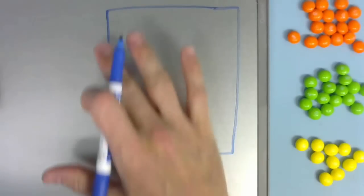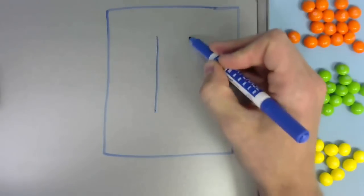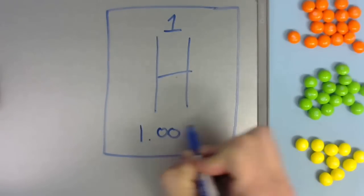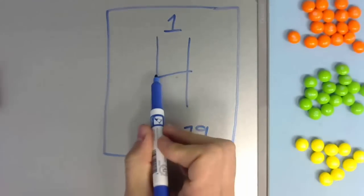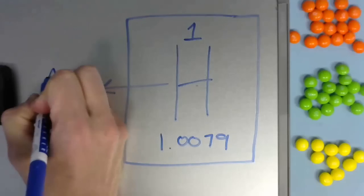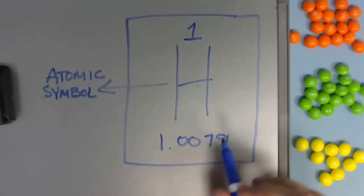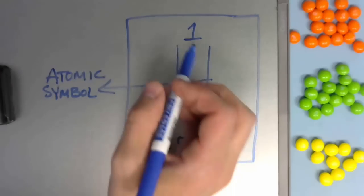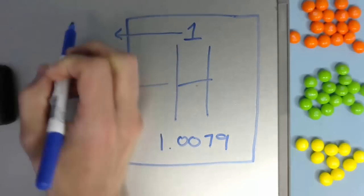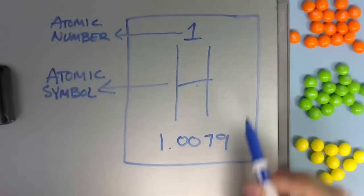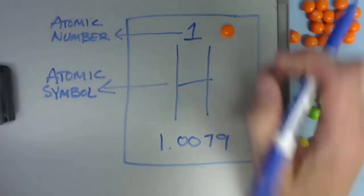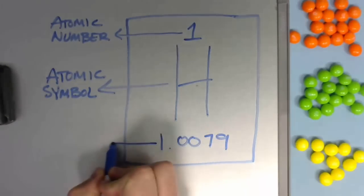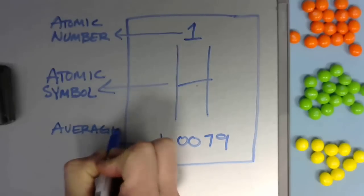If we draw a bigger version of what's on the periodic table of elements, you'll notice for hydrogen you have a big H, a number 1 on the top, and then a number below it. The H is called the atomic symbol. Most elements have an atomic symbol that is the first one or two letters of the element, but not always. The number above it is called the atomic number. The atomic number also equals the number of protons that an atom has.